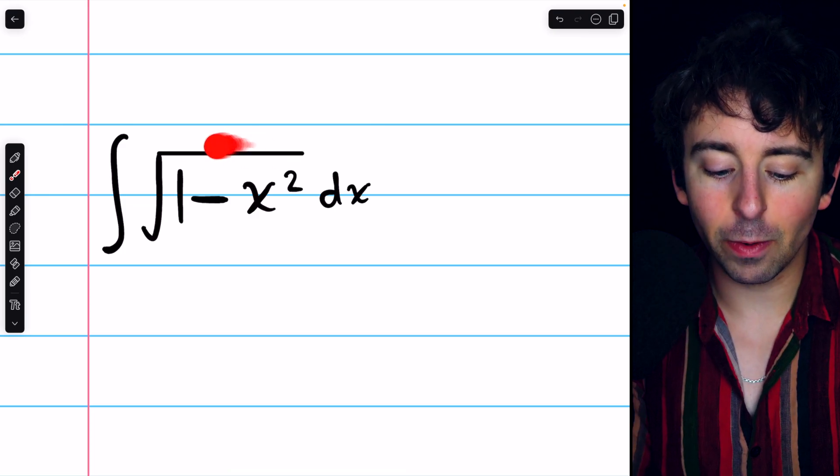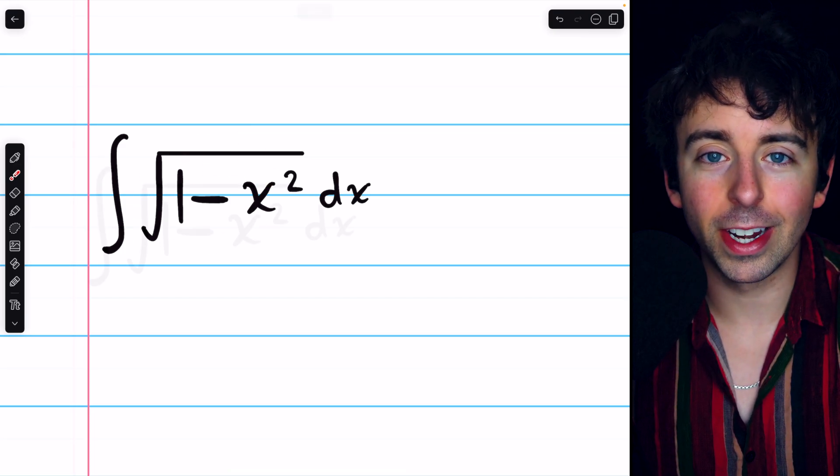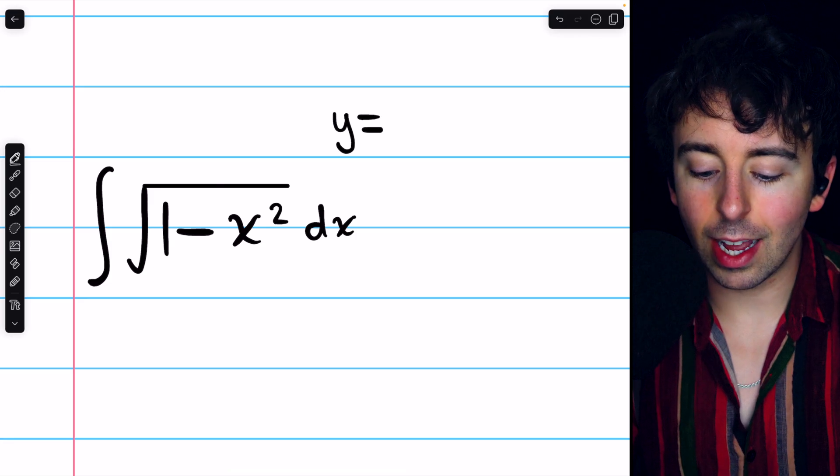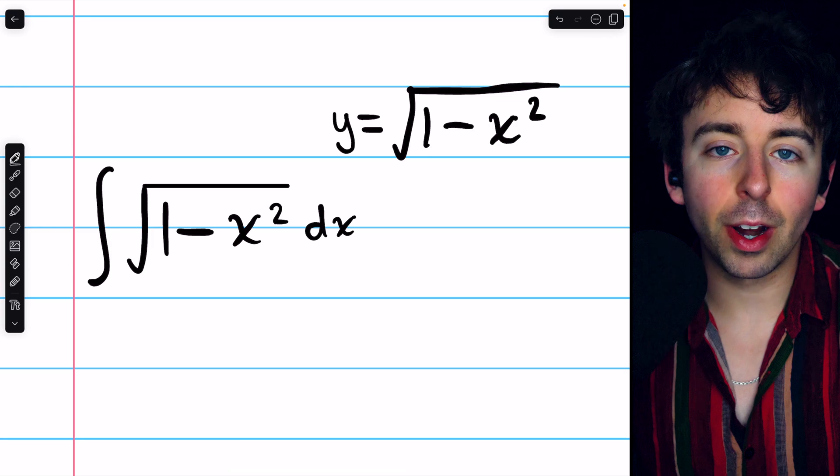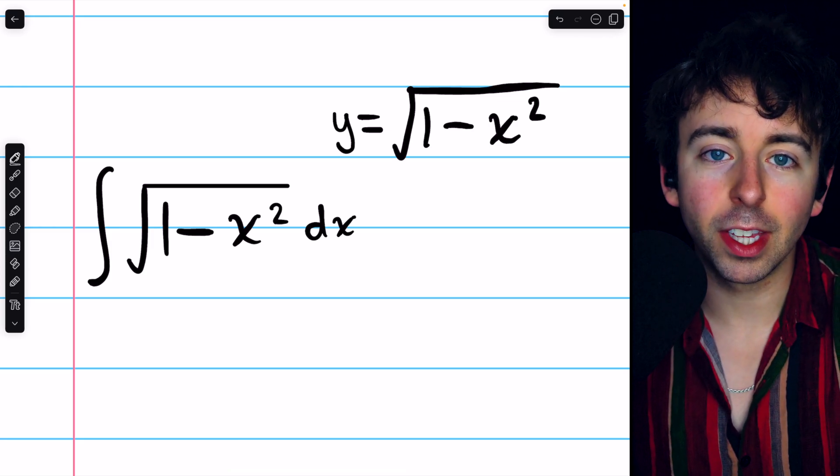But you might recognize that there is some circle stuff going on here. In particular, you may recognize the integrand as being the expression for a semicircle of radius 1, that is, half the unit circle.